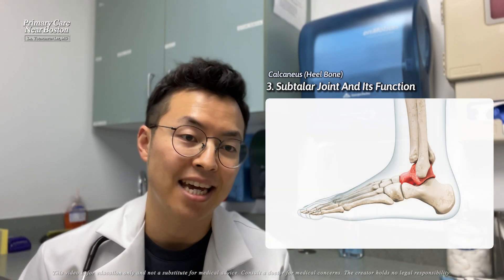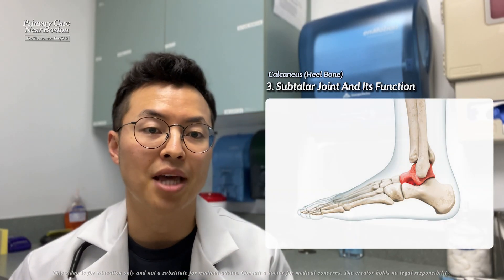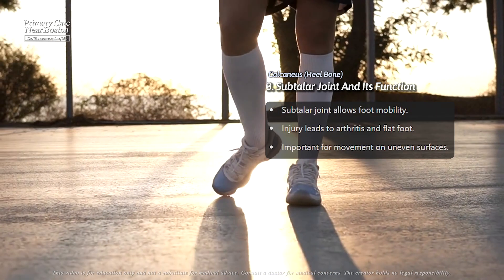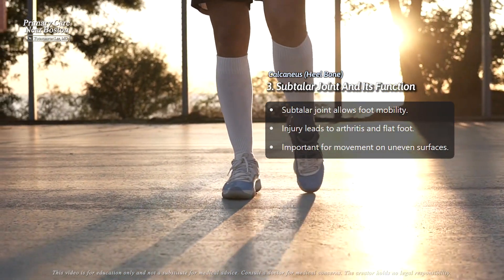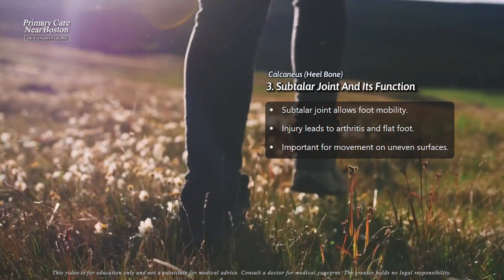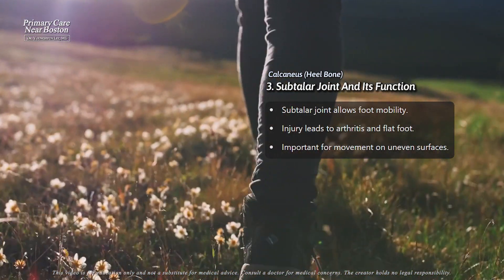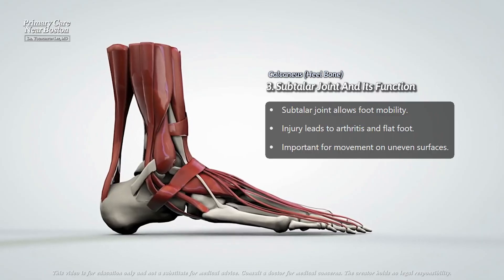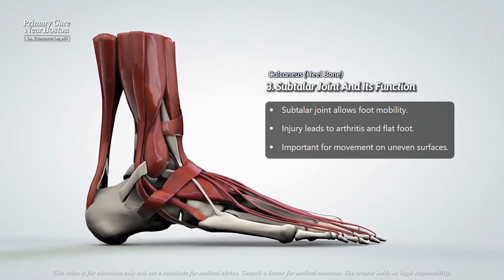On the top side of the calcaneus, it forms a joint with the talus, another important bone. This joint, called the subtalar joint, helps the foot move in different directions, like when you walk on uneven surfaces. If this area gets injured, it can lead to problems like arthritis and changes in the way you walk, such as developing a flat foot.